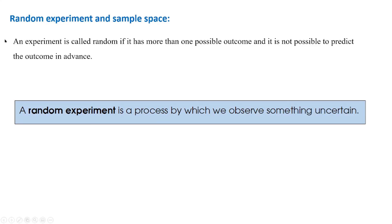First, we will see what is a random experiment. We call an experiment a random experiment if it has more than one possible outcome and we cannot predict the outcome in advance. Then such an experiment is called a random experiment. A random experiment is a process by which we observe something uncertain.